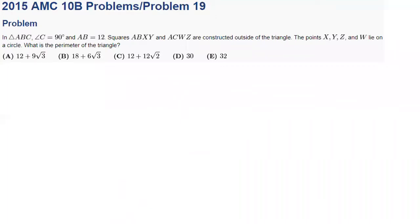we will be taking a look at the 2015 AMC 10B problem number 15. In triangle ABC, angle C equals 90 degrees and AB equals 12. Squares ABXY and ACWZ are constructed outside of the triangle. The points X, Y, Z, and W lie on a circle. What is the perimeter of the triangle?